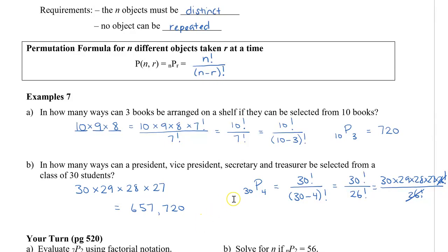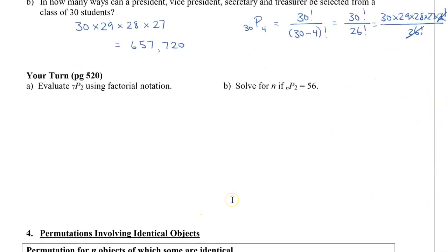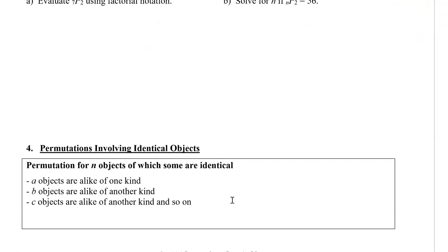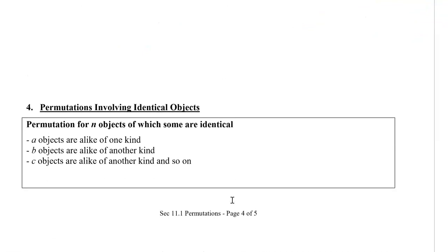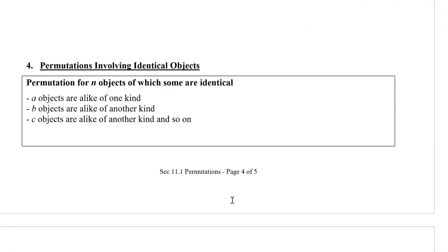Let's take a look at objects that are now identical. If we have objects that have some that are the same, so let's say that we have A objects are like of one kind, B objects are like of another kind, and so on, then we're going to have to alter our formula a little bit.